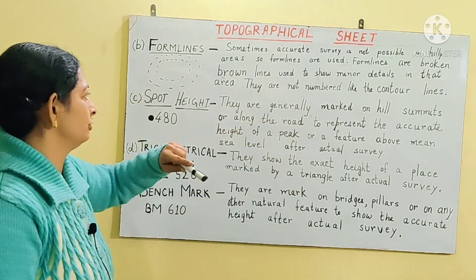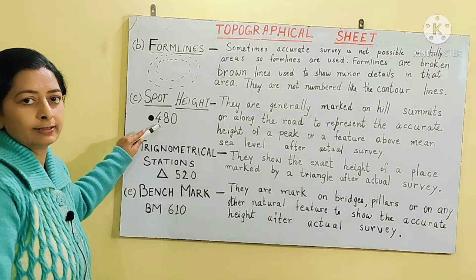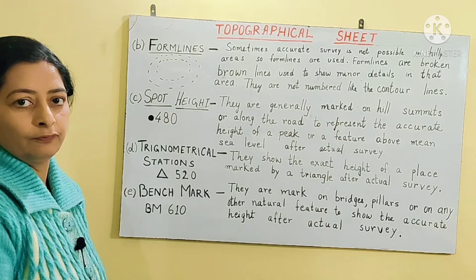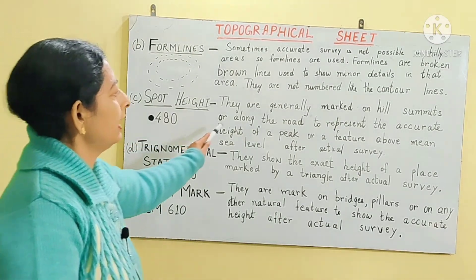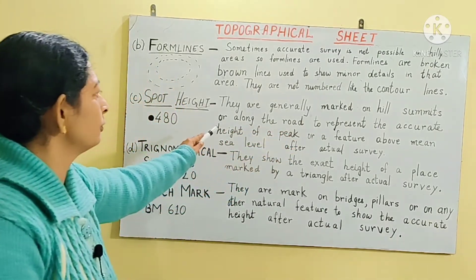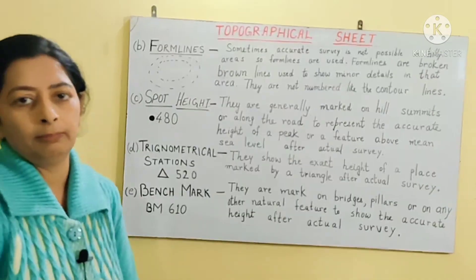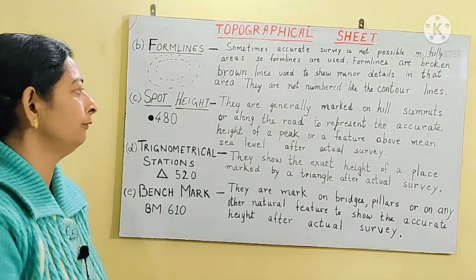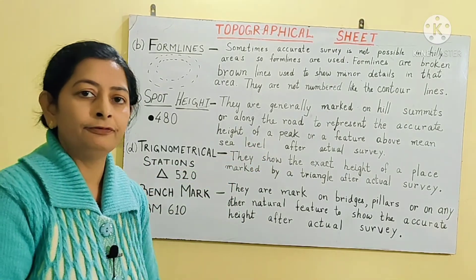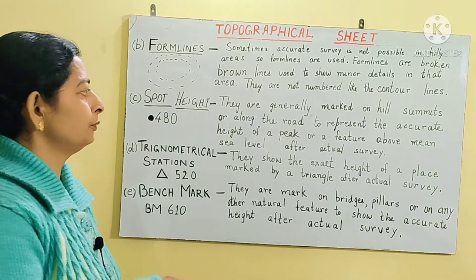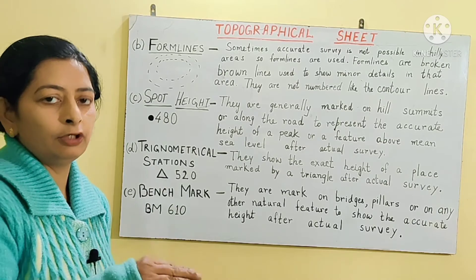Spot heights are shown as a black circle with a number beside it — for example, a black dot with '480' means the accurate height is 480 meters. They are generally marked on hill summits or along roads to represent the accurate height of a peak or feature above mean sea level, which is zero meters, measured after an actual survey.